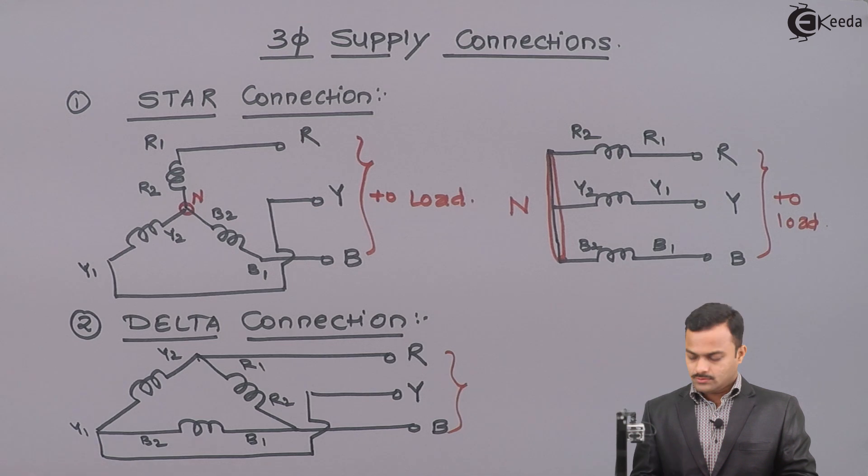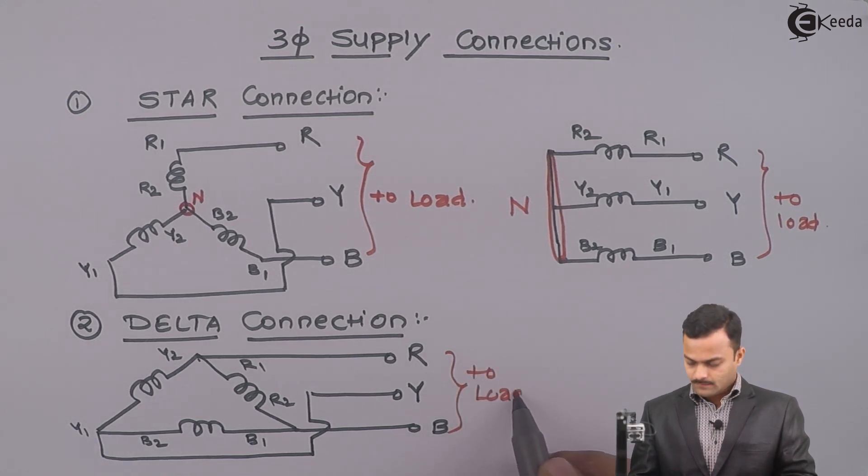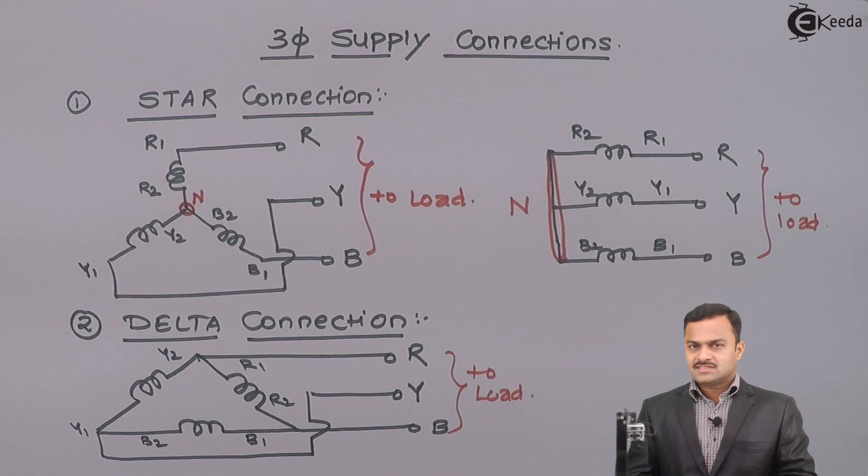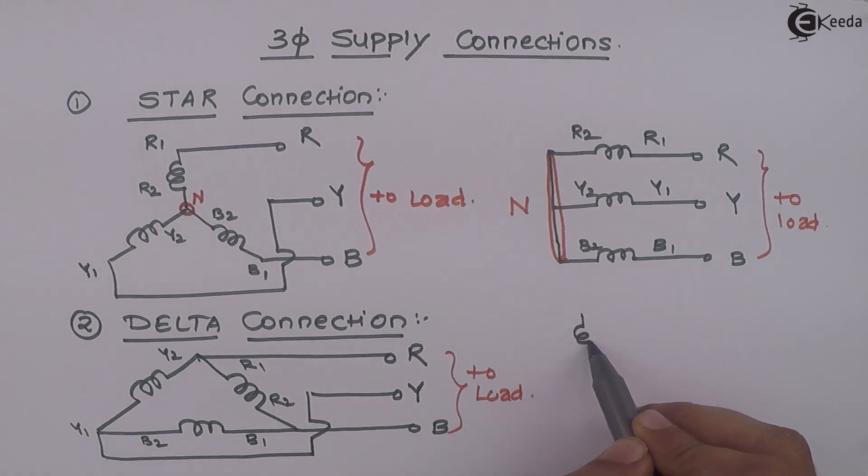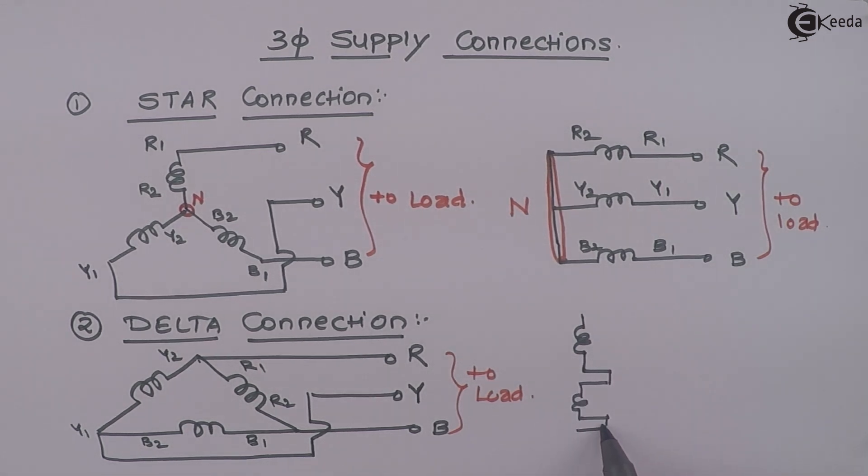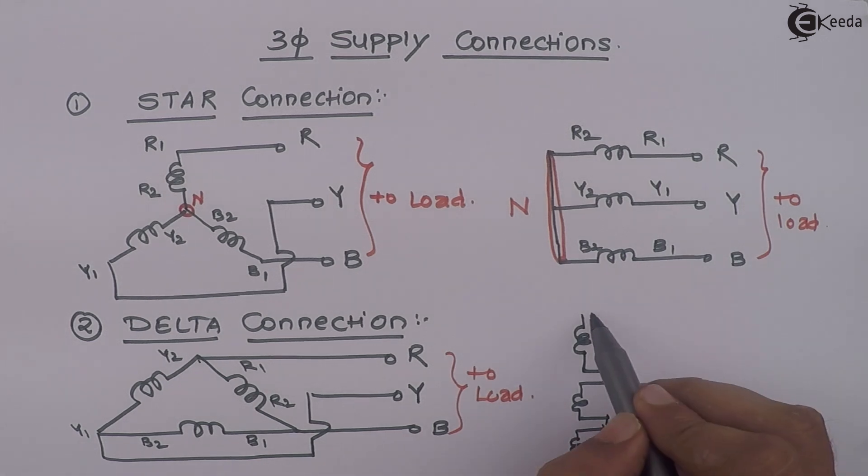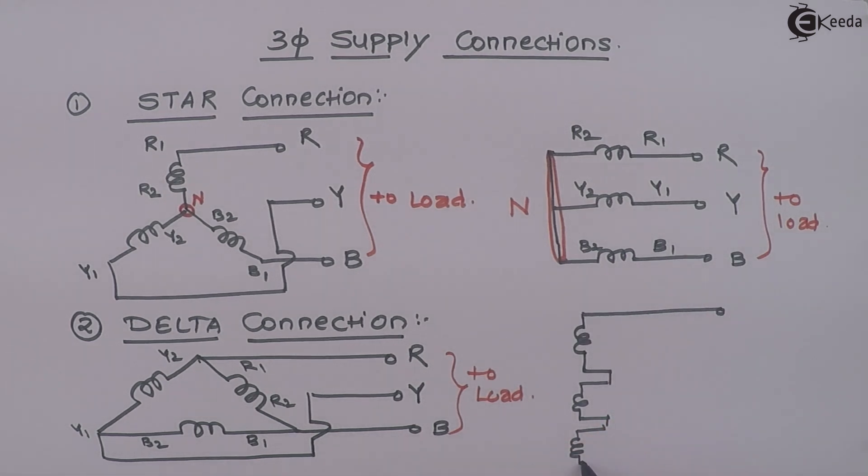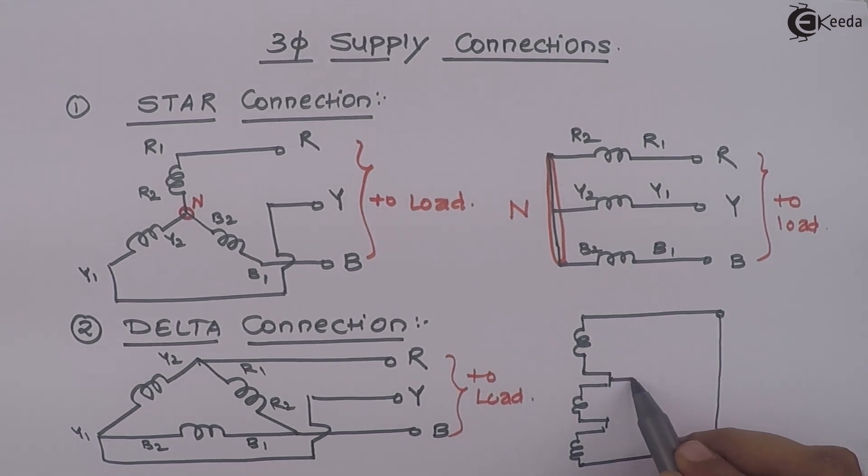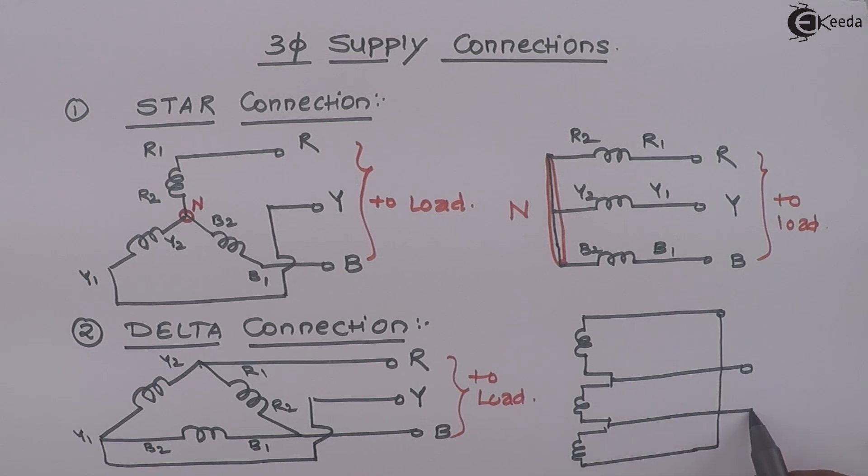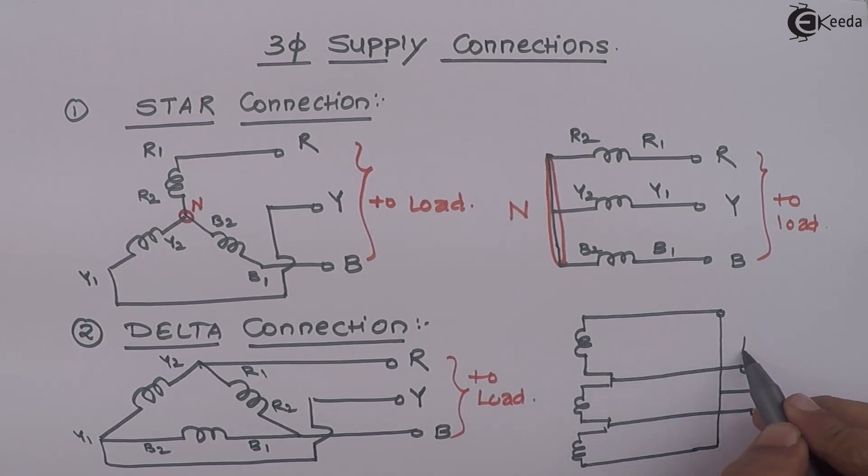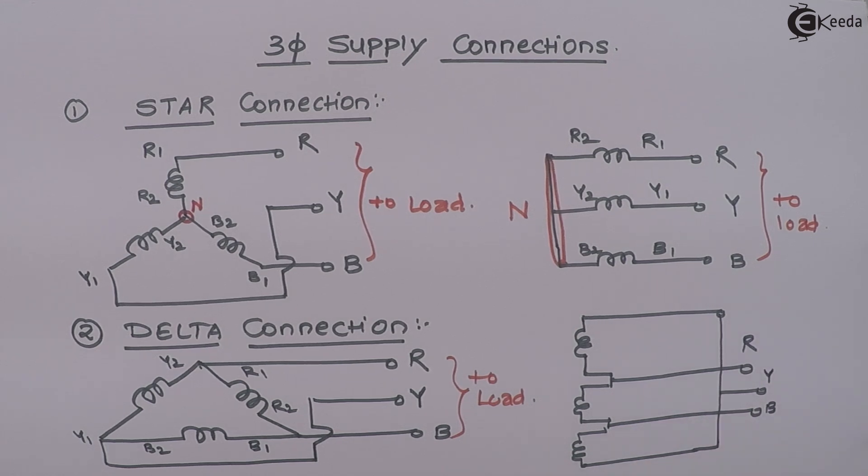Open ends, obviously, for load connection. One more structure for delta is like this. So, it is R, Y, B.